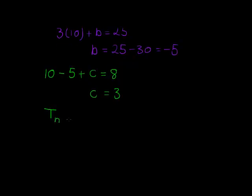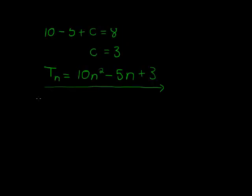And there we go, we have term T_n, and that's simply 10n squared minus 5n plus 3. Not too bad. Now we can go ahead and answer the types of questions they might ask.